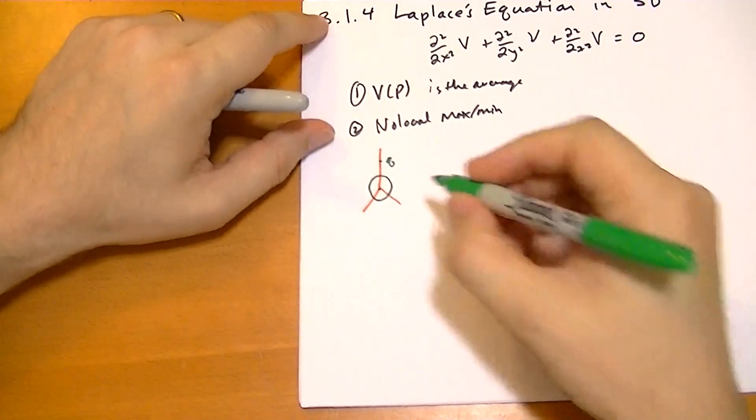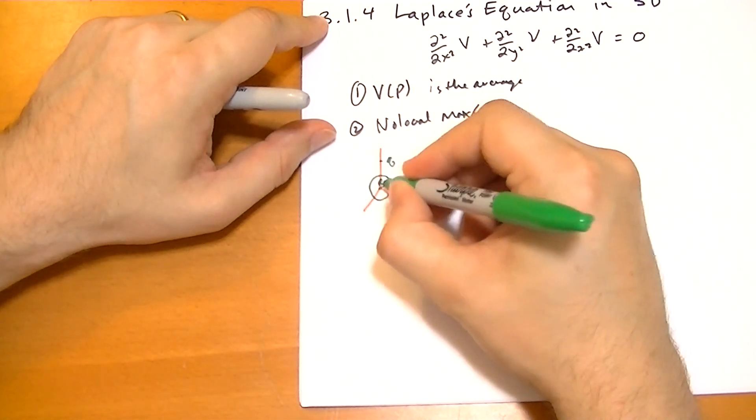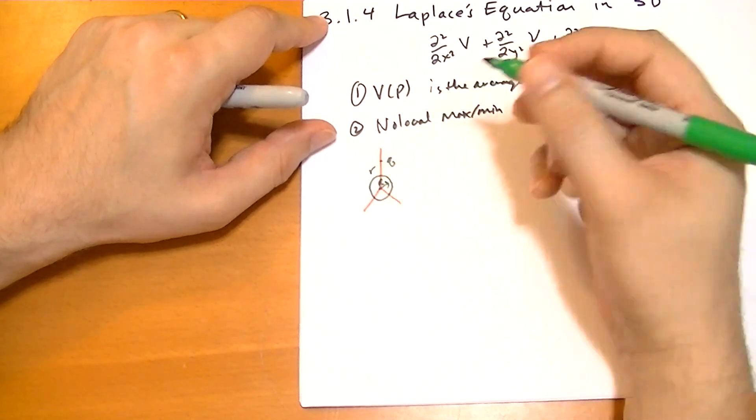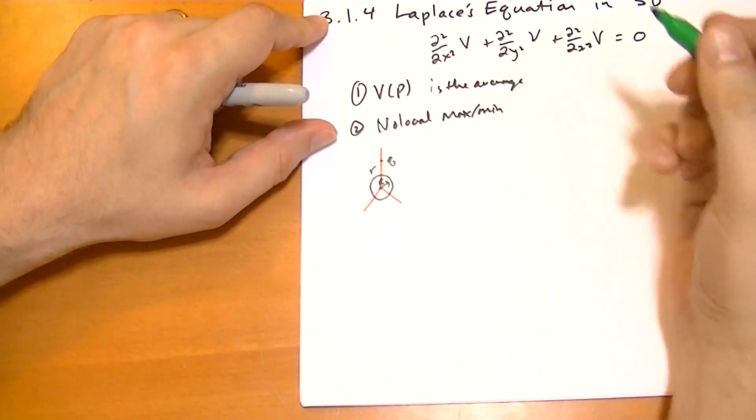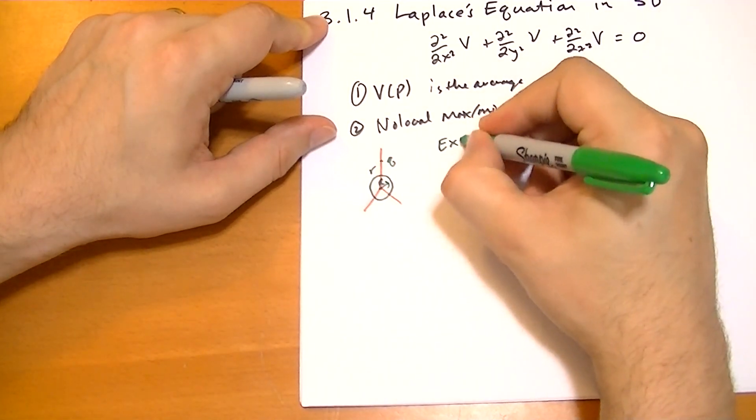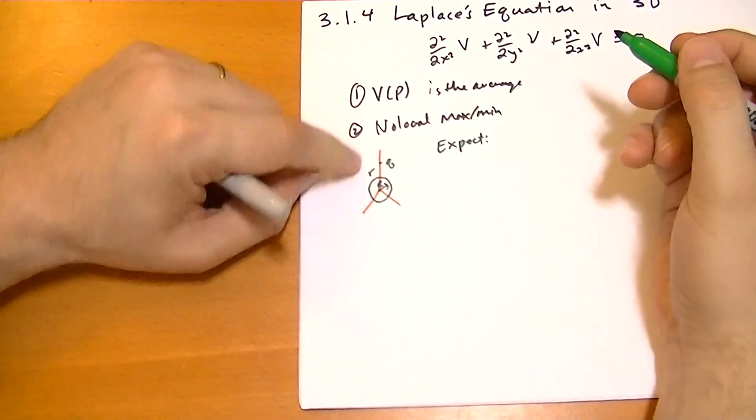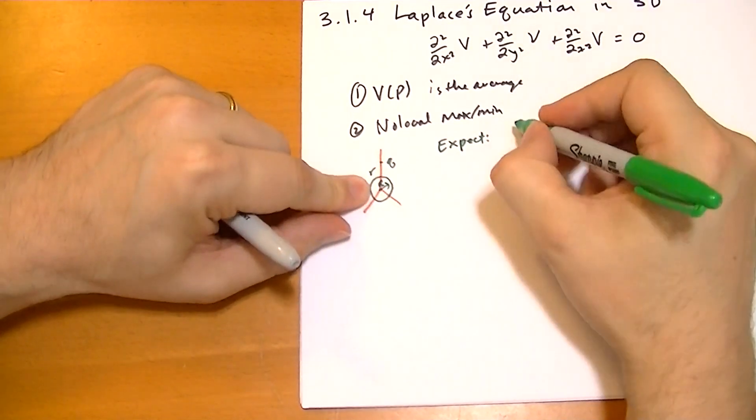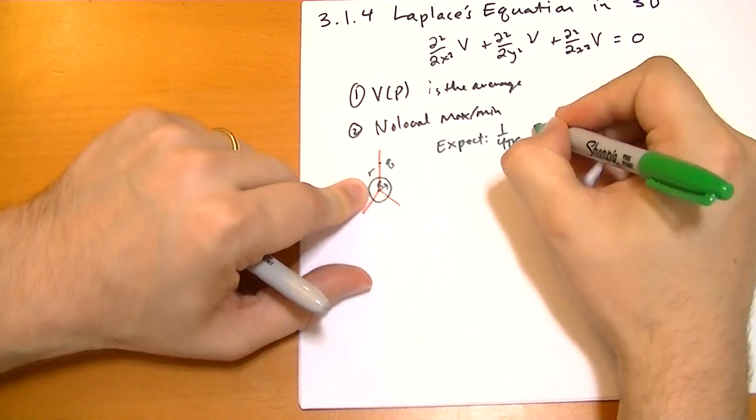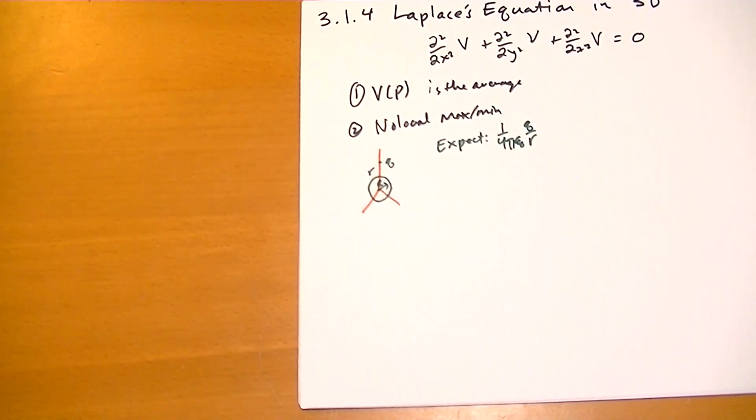So really quickly, there's a radius r here. This is the height r, which is the distance from the origin of the sphere. And so let's write things out. So we expect the potential at the origin should just be 1 over 4 pi epsilon naught q over r. So that's the answer we're looking for.